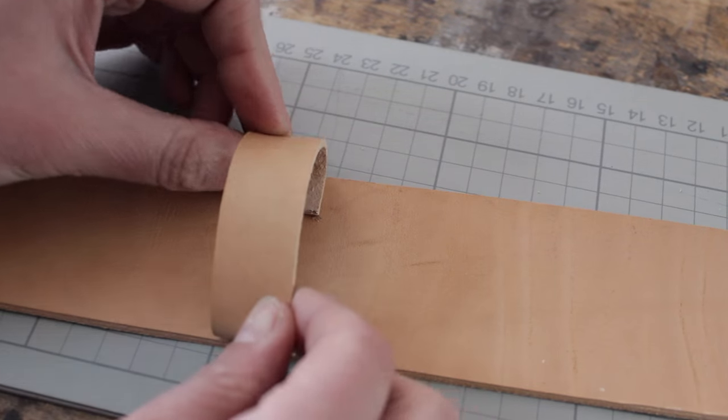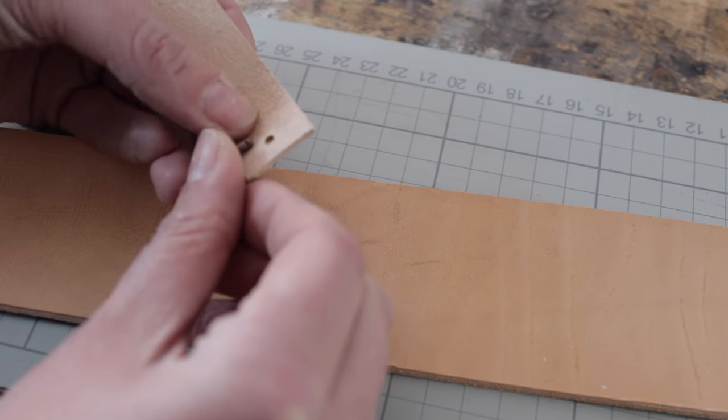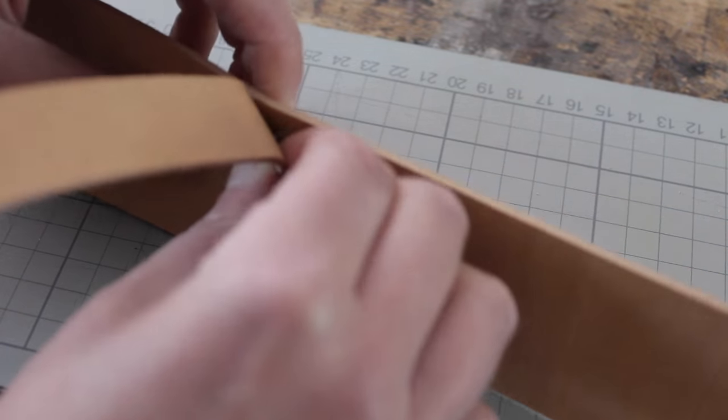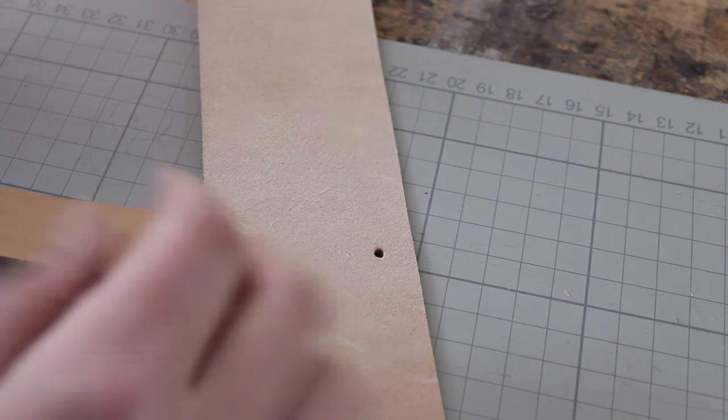Line your handle up on the sleeve. Take a rivet, put it through your handle, put it through the sleeve, and on the other side attach the cap.